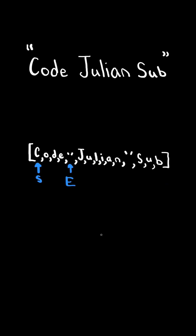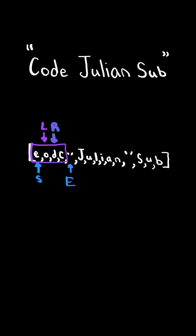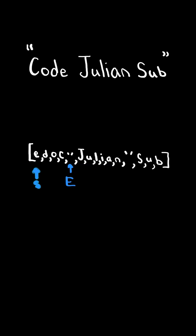Now if the end pointer points to a space character, then we came across a word that we need to reverse. We will then have two pointers: left equaling start and right equaling end minus 1. We will swap the characters at left and right, then advance left and decrement right. We repeat until left and right cross each other, finishing the reversal. Finally, we set the start pointer equal to end plus 1 and continue iterating through the list using the end pointer.